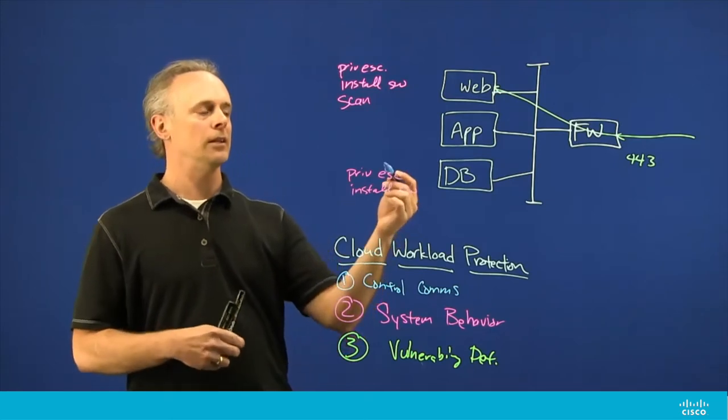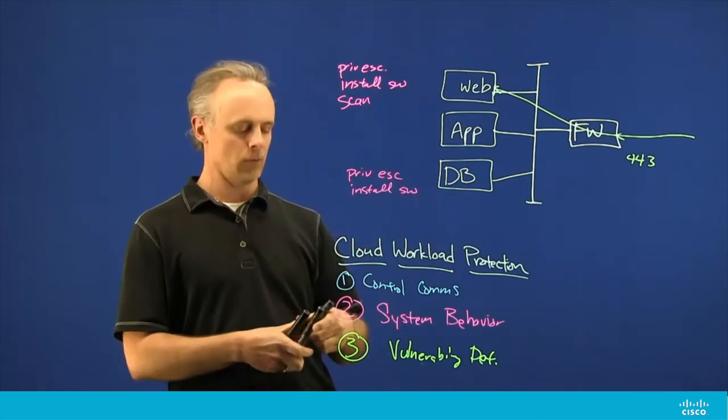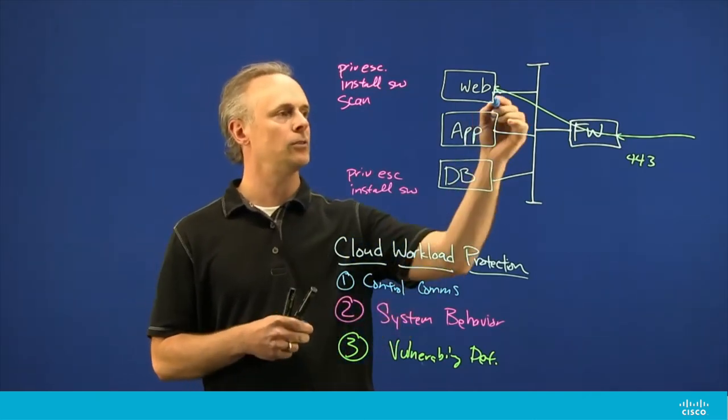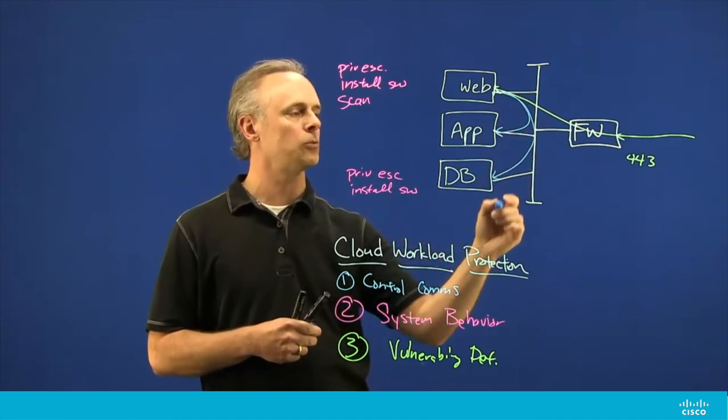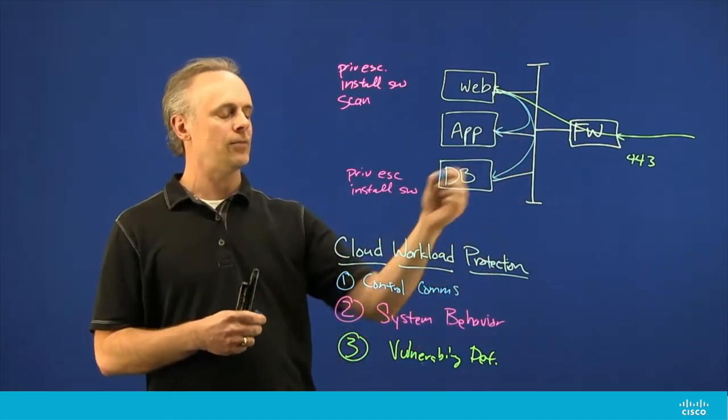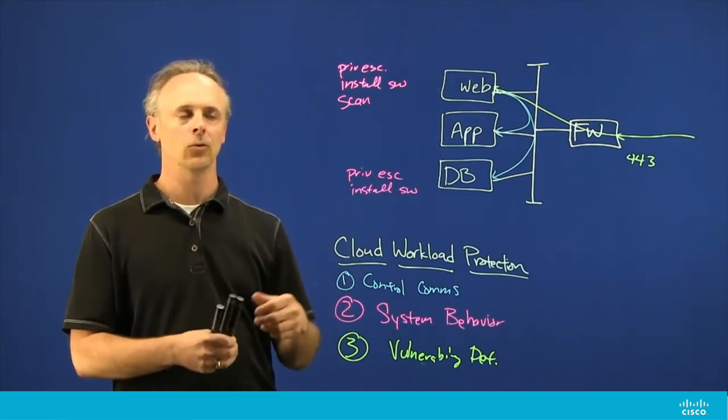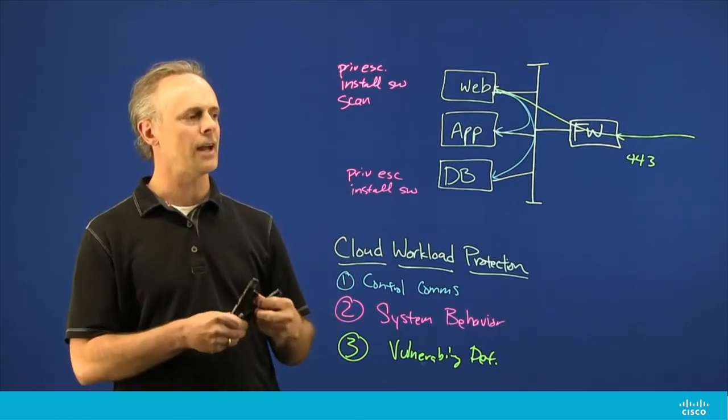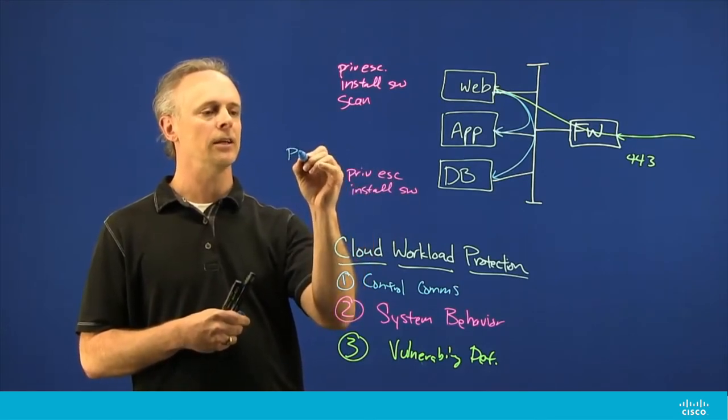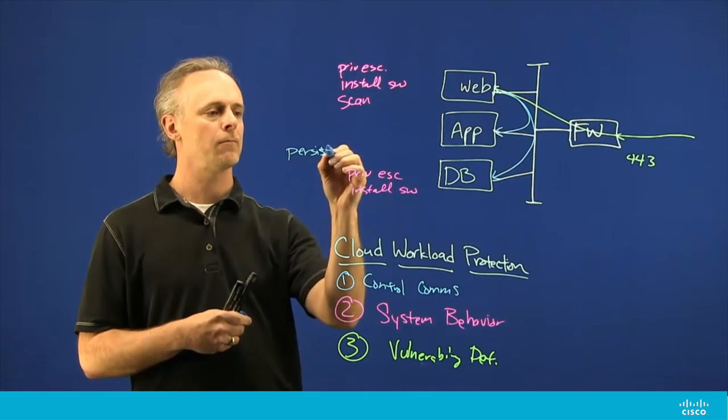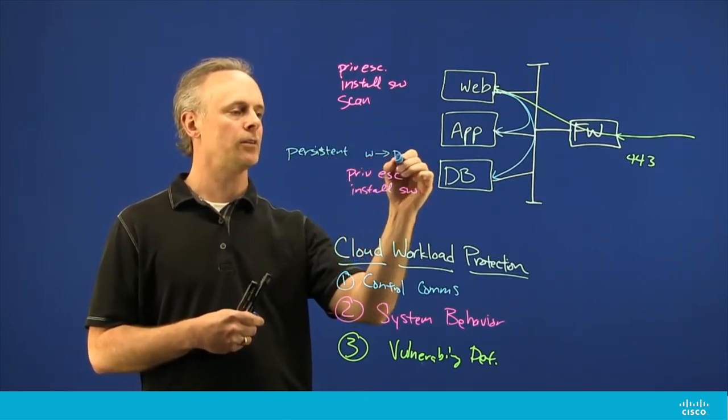In this particular case, they got into the web server, were able to execute that vulnerability, and then they could scan and see what other systems were there. Once they found that there was a database running by looking around and scanning for well-known ports, they could install the software and then initiate a persistent connection from the web server to the database server.